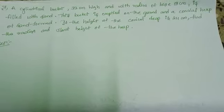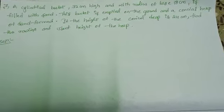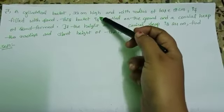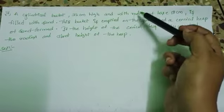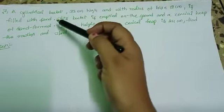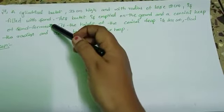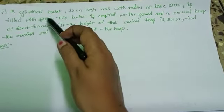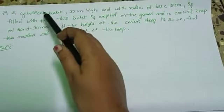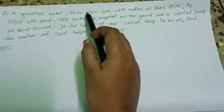Let's discuss 7th question in exercise 13.3. A cylindrical bucket 32 cm high and with radius of base 18 cm is filled with sand. Here volume of the sand equal to volume of the cylindrical bucket.